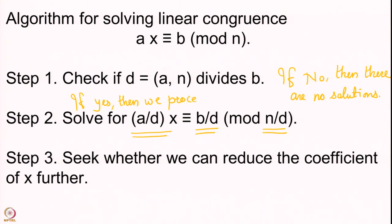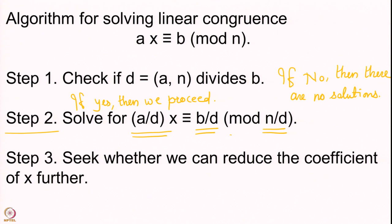If yes, then we proceed to step 2, which is to solve for a by d: (a/d)x ≡ (b/d) mod (n/d). Having done this, the number of solutions has changed. Earlier we had d solutions, and now because the GCD of (a/d) and (n/d) is 1, we are going to get a unique solution, whereas in the earlier case we have d solutions. That is one small thing we need to take care of.